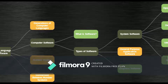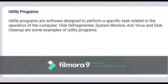For each and every device, there will be a special slot in the CPU. Next one is utility programs. Utility programs are software designed to perform a specific task related to the operations of the computers. These specific softwares improve the performance of a computer. Examples of utility programs are disk defragmenter, system restore, antivirus and disk cleanup.